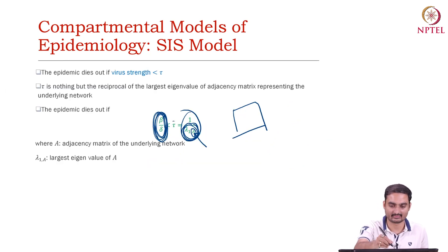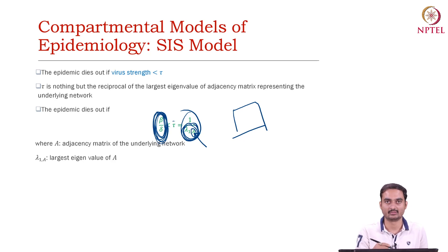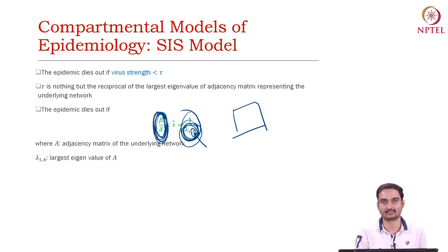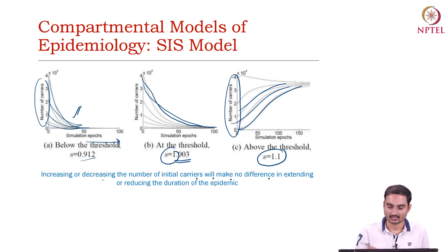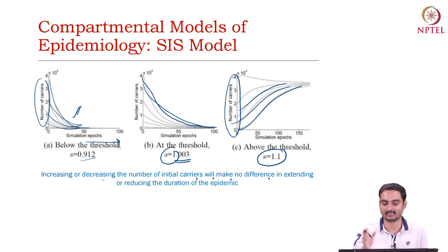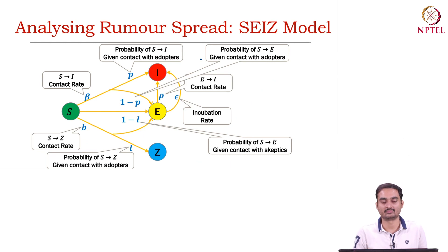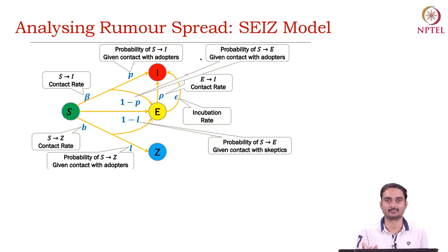We also discussed something called the strength of a virus, which is beta divided by delta — the probability of infection over the probability of cure, basically the fraction of birth rate and death rate. We saw there is a nice correlation with the largest eigenvalue of the graph adjacency matrix. We also discussed different relations between the number of iterations versus number of carriers. All the discussions were based on real-world epidemic spread models — Ebola spread model, measles spread model and so on.